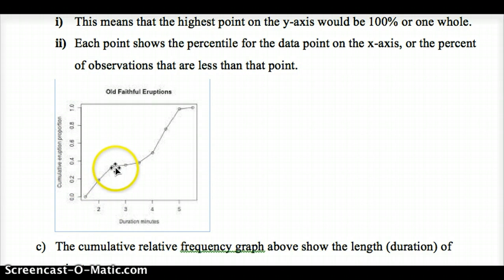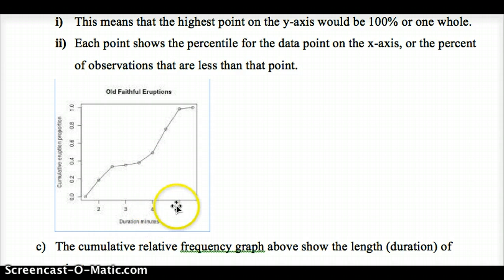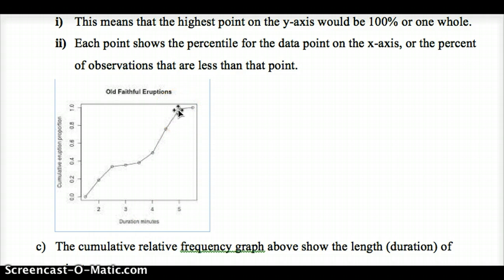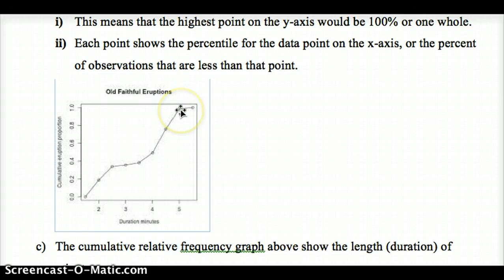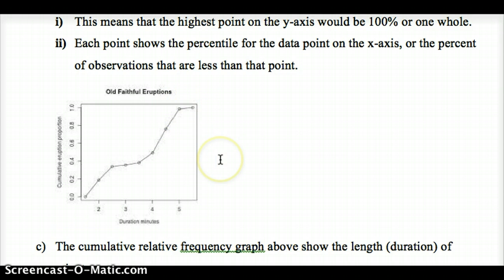Each of these points represents a percentile. If we find 5 minutes on the x-axis and go straight up, we can see that about 98% of the data falls below that. That means about 98% of eruptions are less than 5 minutes, and having an eruption over 5 minutes would be quite rare.